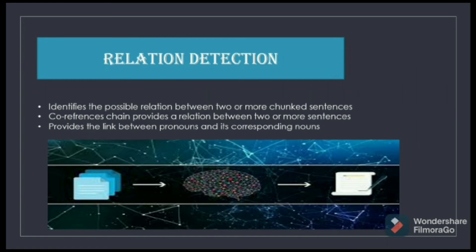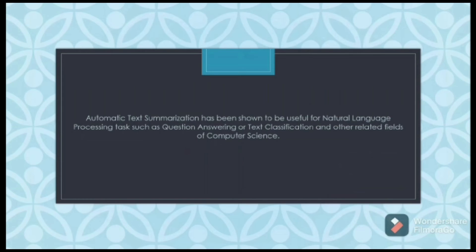Relation Detection identifies the possible relation between two or more chunk sentences. Core Reference Chains provide the relation between two or more sentences and provide the link between pronouns and their corresponding nouns.